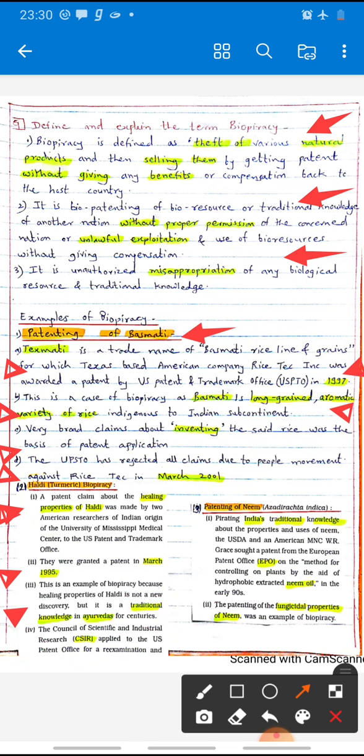It is traditional knowledge in Ayurveda for centuries. The Council of Scientific and Industrial Research, that is CSIR, applied to the USA Patent Office for re-examination, and so this patent was cancelled.